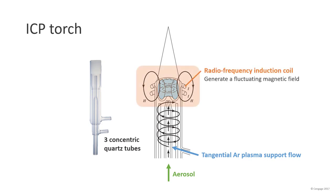The top of the outer tube is surrounded by a water-cooled induction coil, which is powered by a radio frequency generator. This will generate a fluctuating magnetic field.